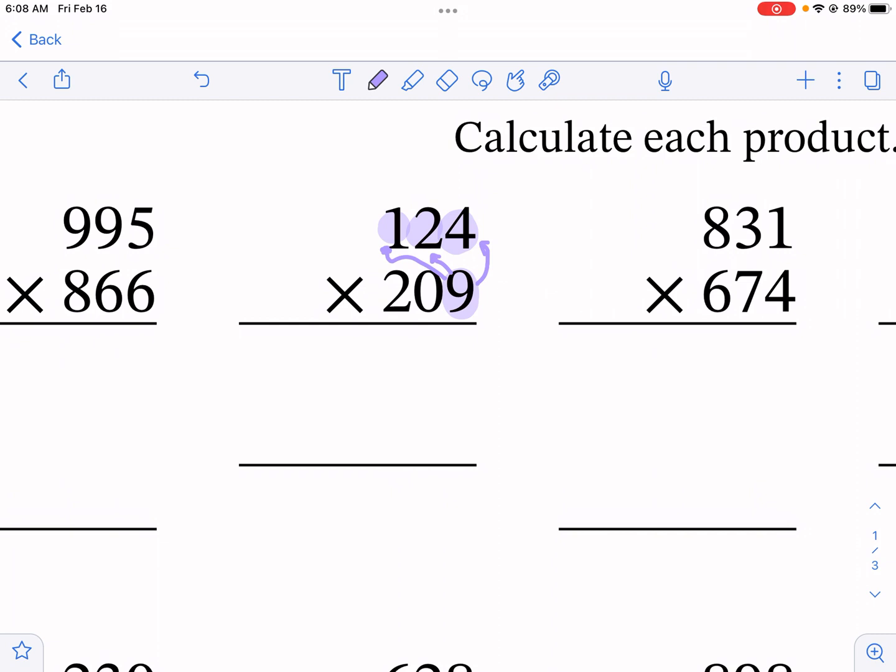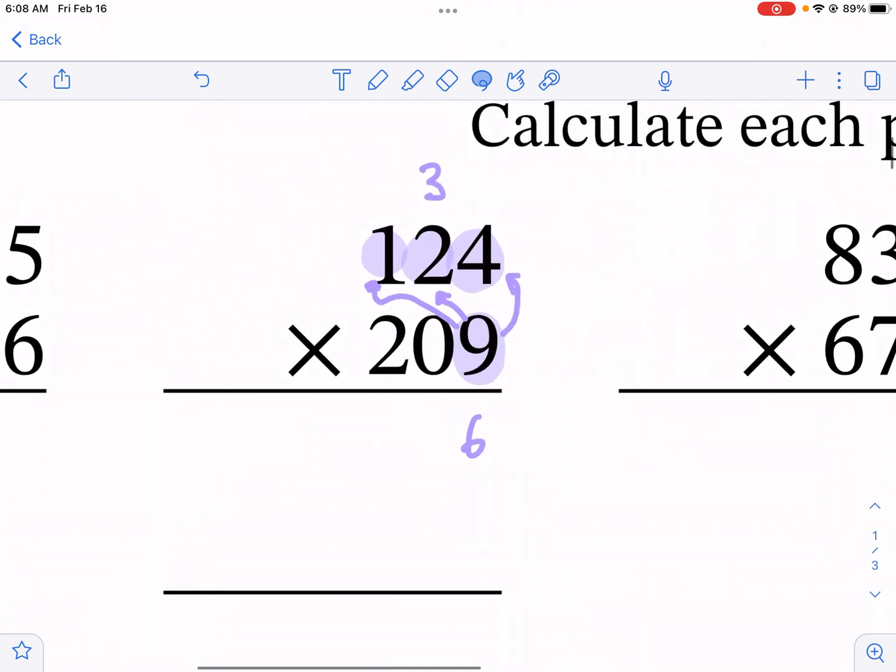Multiplying this nine by each one of these digits and I'm going to start with the four. So I have nine times four and that gives me 36. Now I can't just write 36 here. Instead I need to take this three and carry it over to the next place.